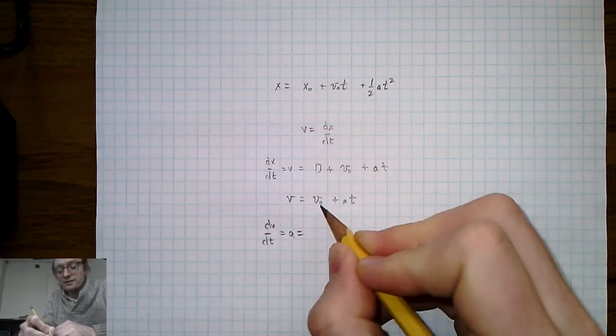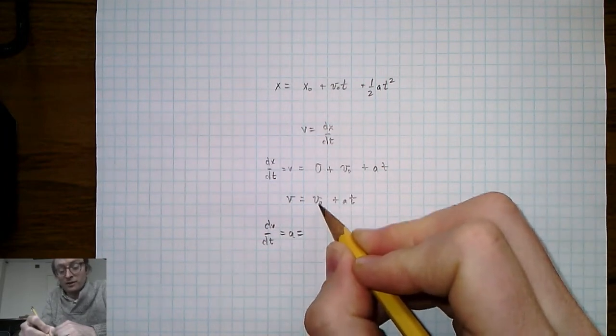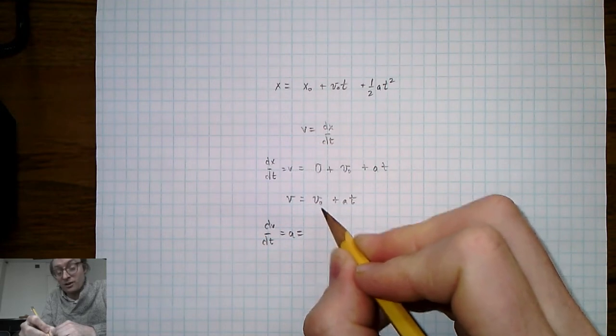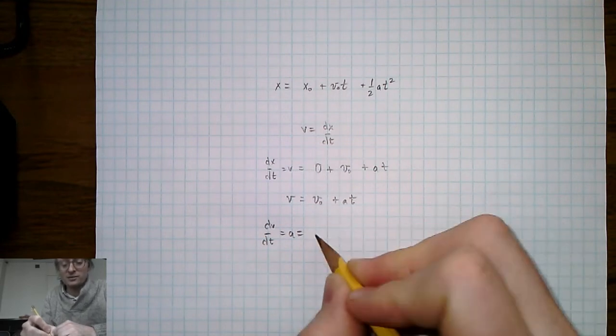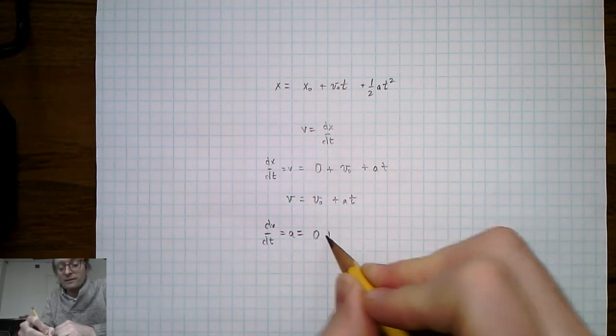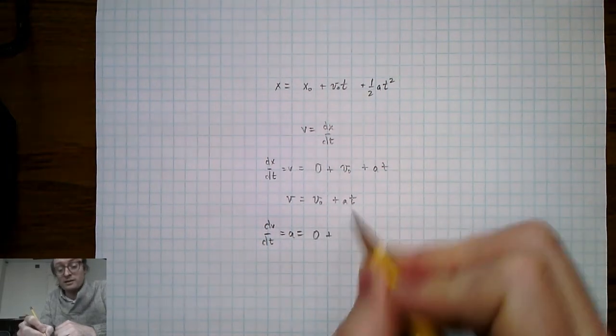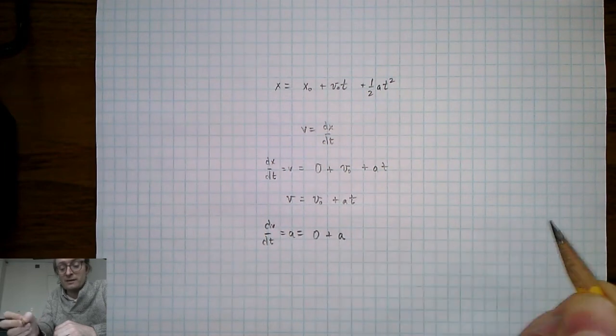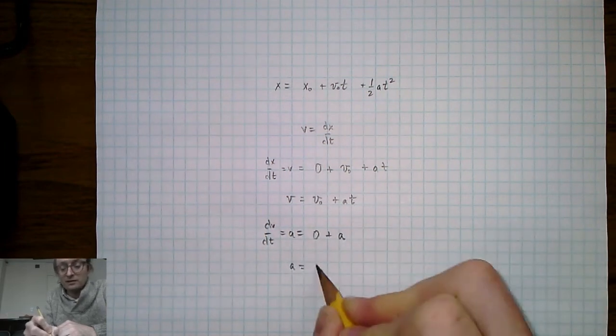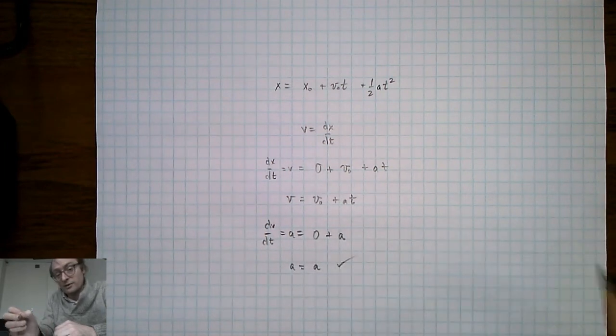This makes a lot of sense. The first term, v0, is a constant with no t attached, so that becomes zero. The second term, at, when we take the derivative with respect to time, simply returns a. So a equals a, which is what we'd expect.